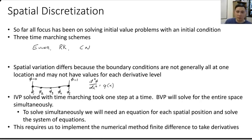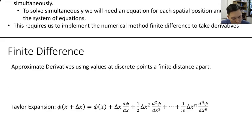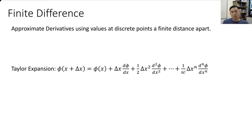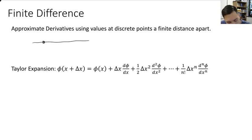To solve simultaneously, we need to implement the numerical method of finite difference to take derivatives, and we'll be focusing today on just taking derivatives. Finite difference is an approximation of a derivative using values at discrete points, which are themselves a finite distance away from each other.